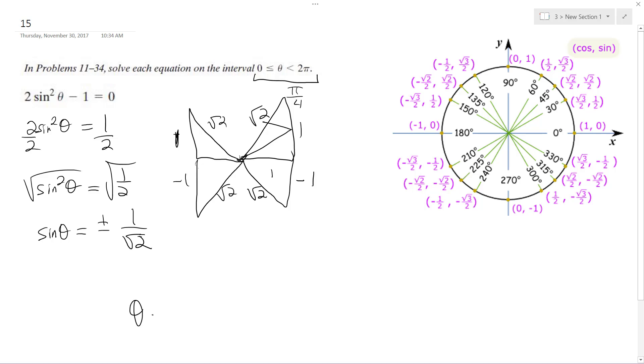So theta is going to be equal to pi over 4, 3 pi over 4, so pi over 4, 3 pi over 4, 5 pi over 4, and finally 7 pi over 4.